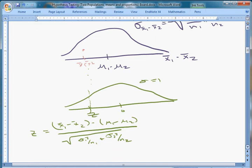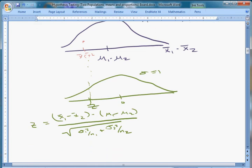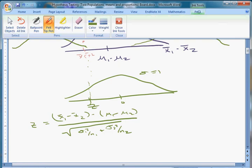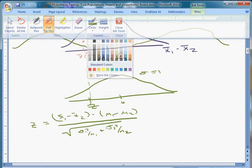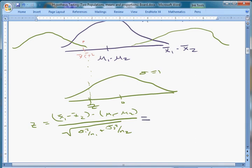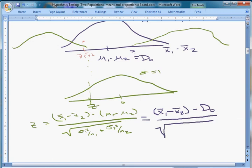Now, we don't know μ₁ minus μ₂ because we're doing hypothesis testing, so we don't really know where this curve is. It could be here, it could be here, it could be here. So our test statistic is going to rely on a hypothesized value. The test statistic under the null looks like X̄₁ minus X̄₂ minus D₀, where D₀ is our hypothesized difference. That D₀ is where the distribution is centered under the null, over σ₁² over n₁ plus σ₂² over n₂.